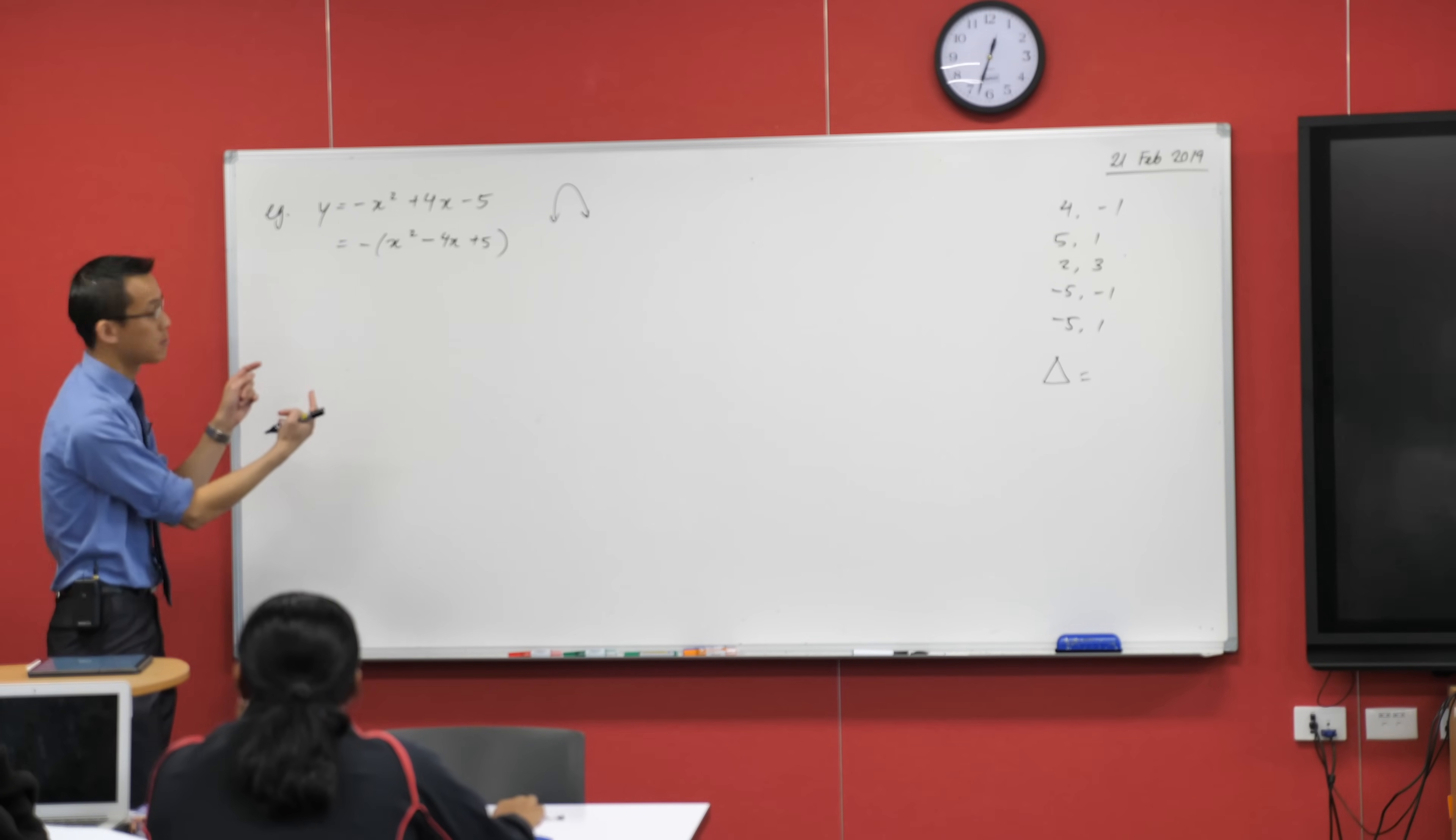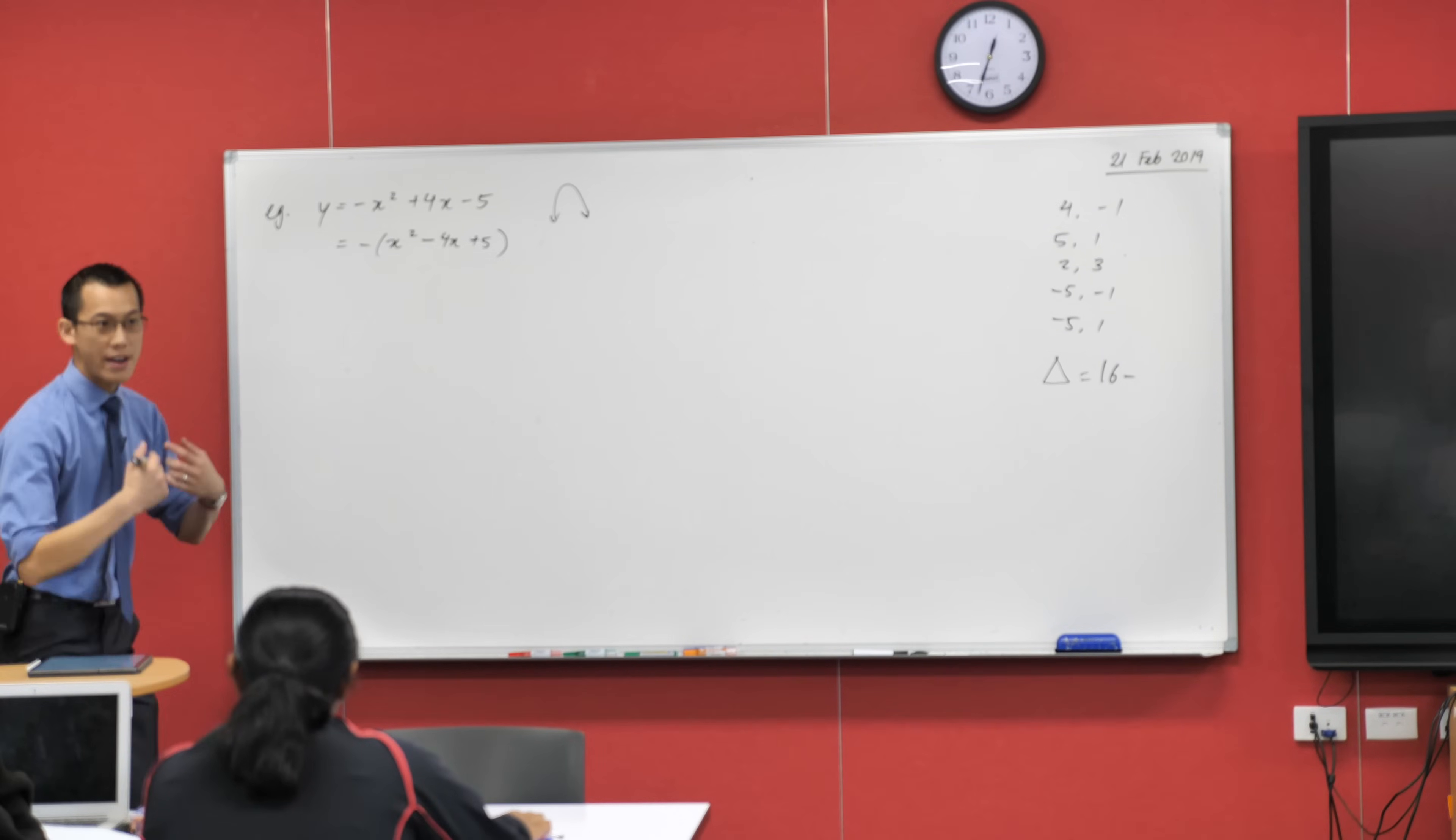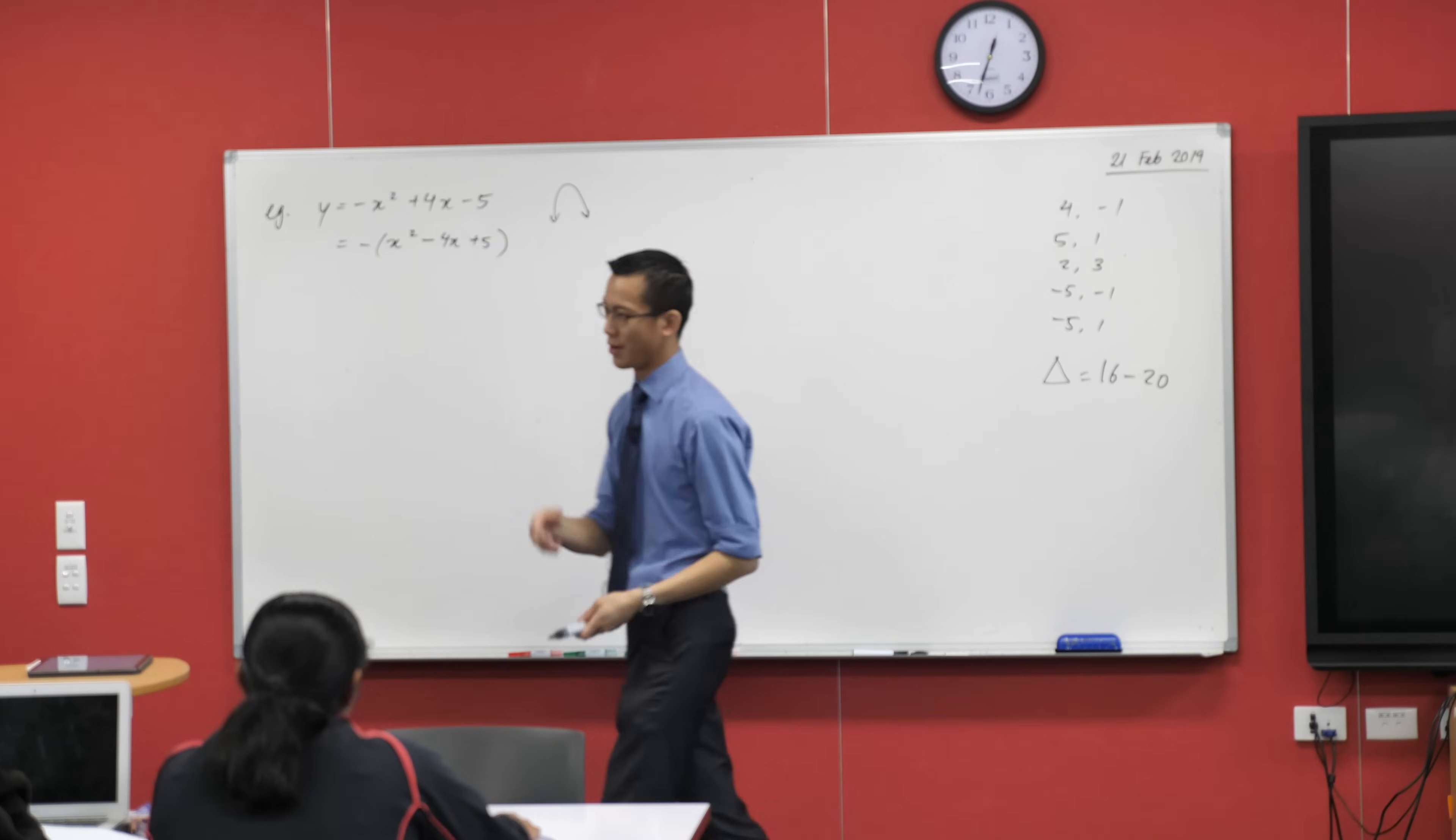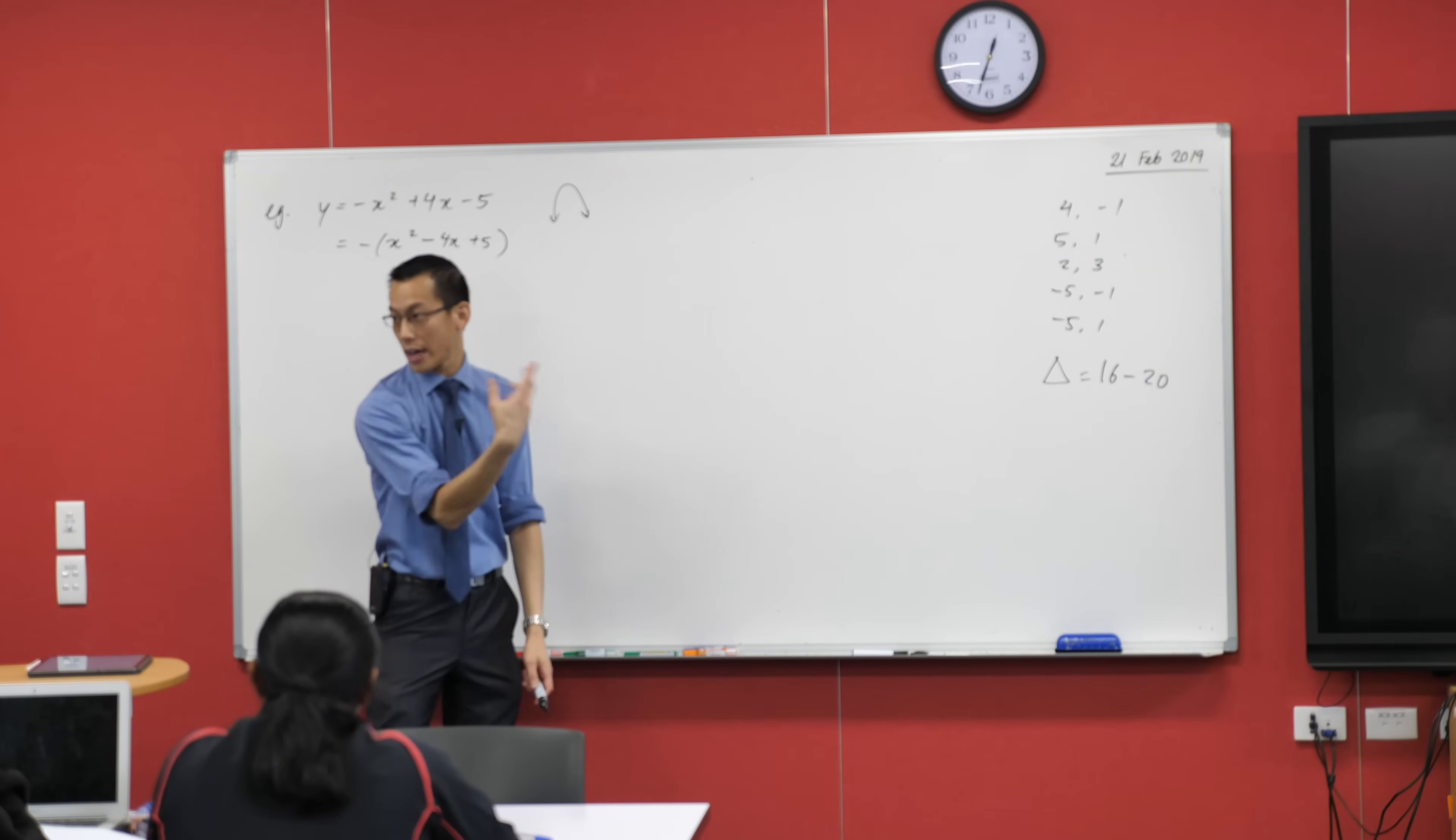What's b squared in this case? B squared in this case will be 16. Minus 4ac in this case will be minus 4ac, which I think is minus 20. Now I don't even need to know what that's equal to. Do you see what I mean?